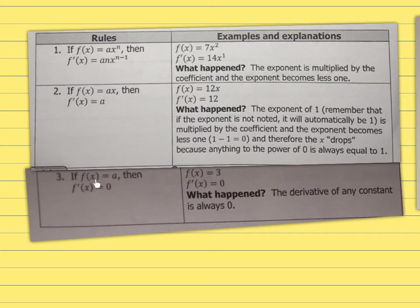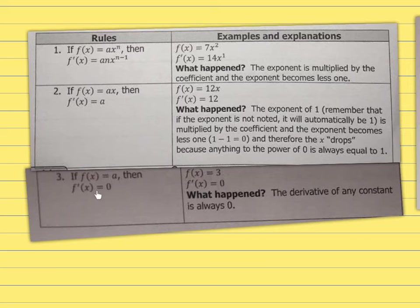Rule 3: if f(x) equals a — just a number with no variable — then the derivative is always 0. There is nothing to multiply with, so it's 3 times 0, which is always 0.